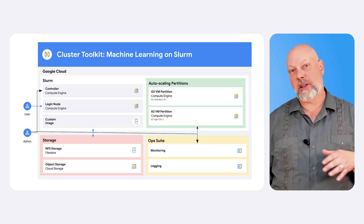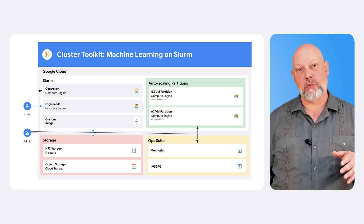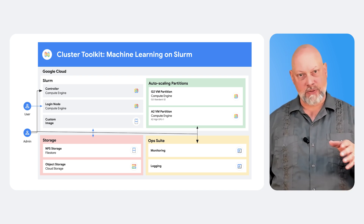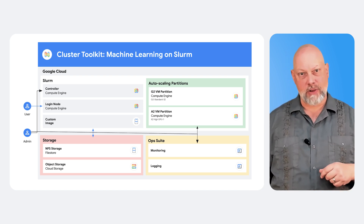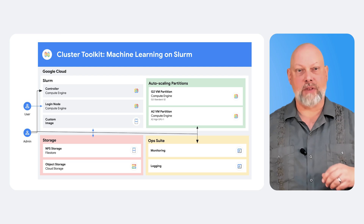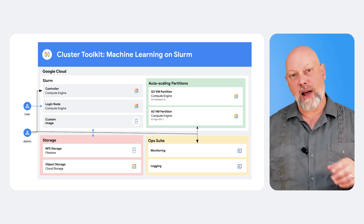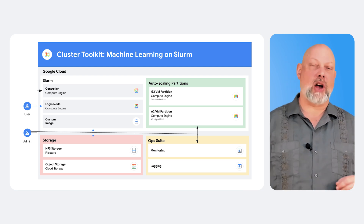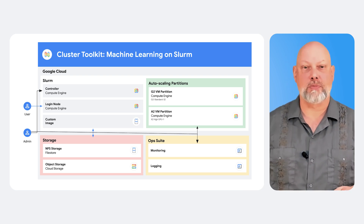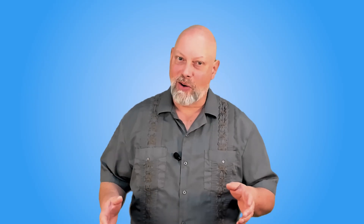We can do this by deploying three blueprints: a base blueprint for setting up networking in the file system, another one that defines the base image we can use, and a final blueprint that describes the cluster deployment.